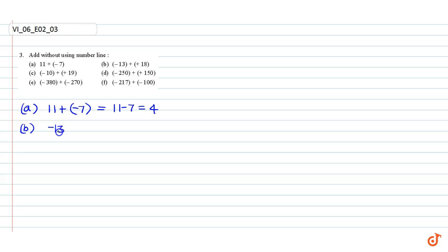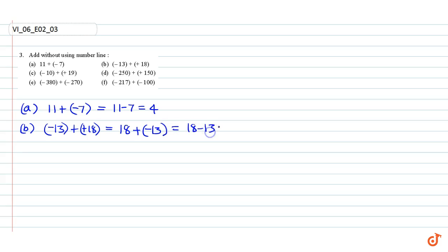Part b: minus 13 plus 18. Rearranging the numbers we get 18 plus minus 13, which is equal to 18 minus 13, which is equal to 5.